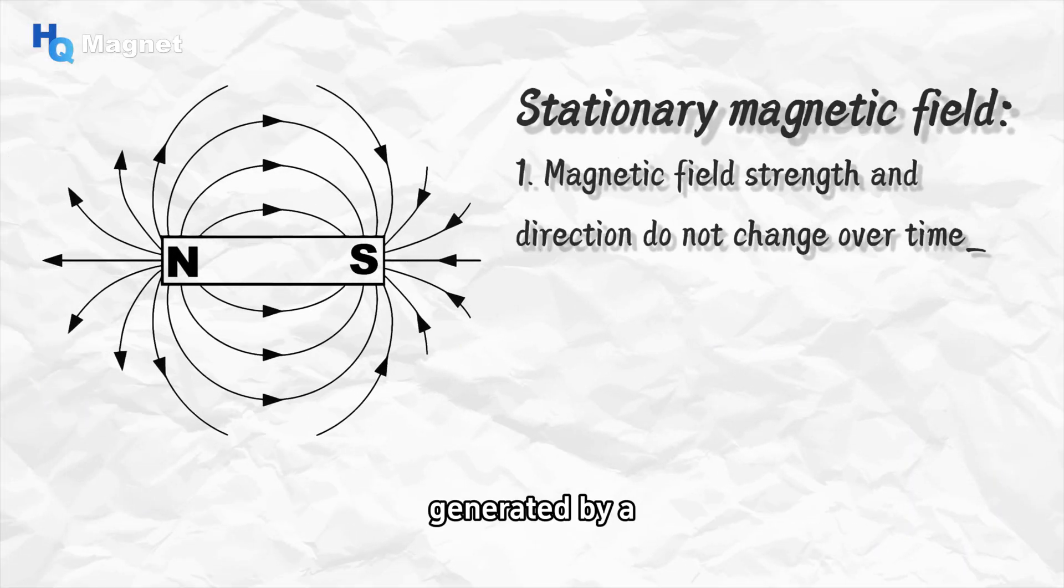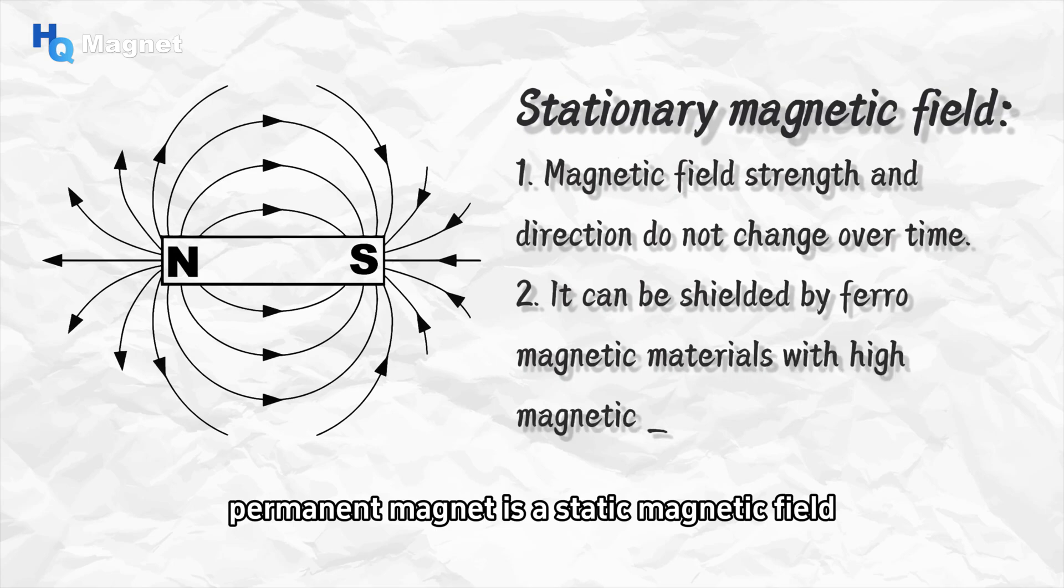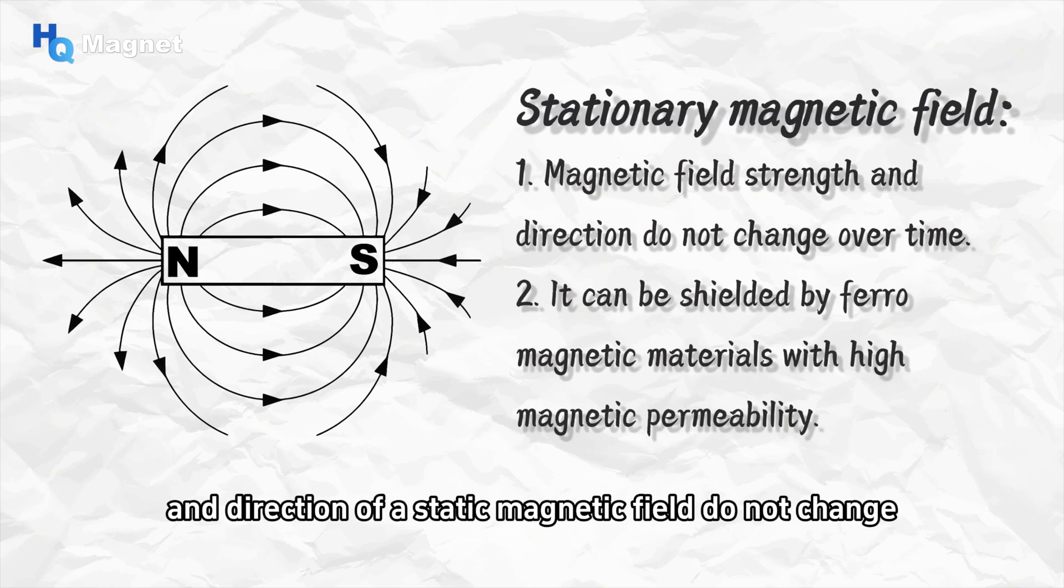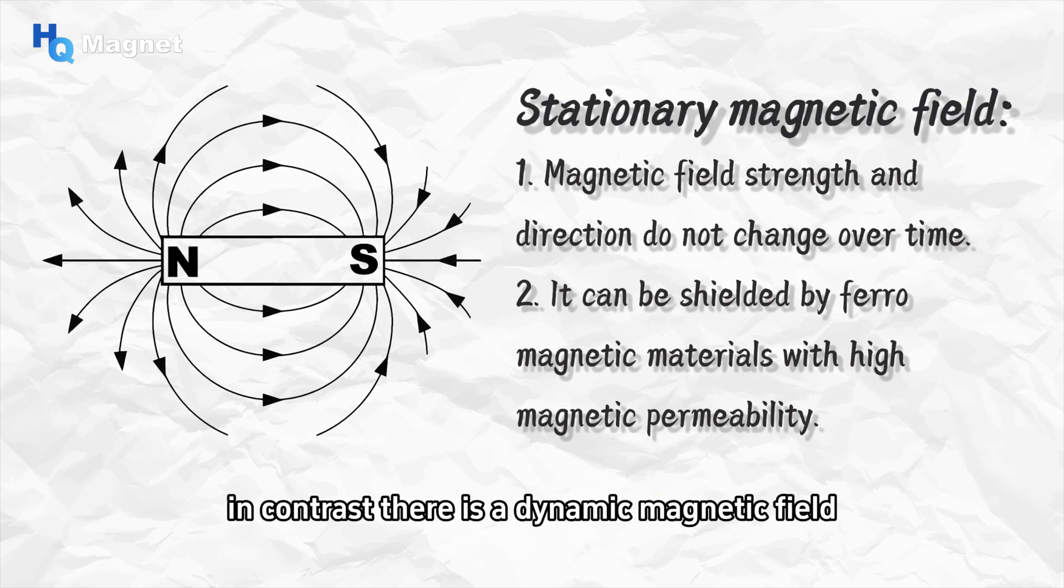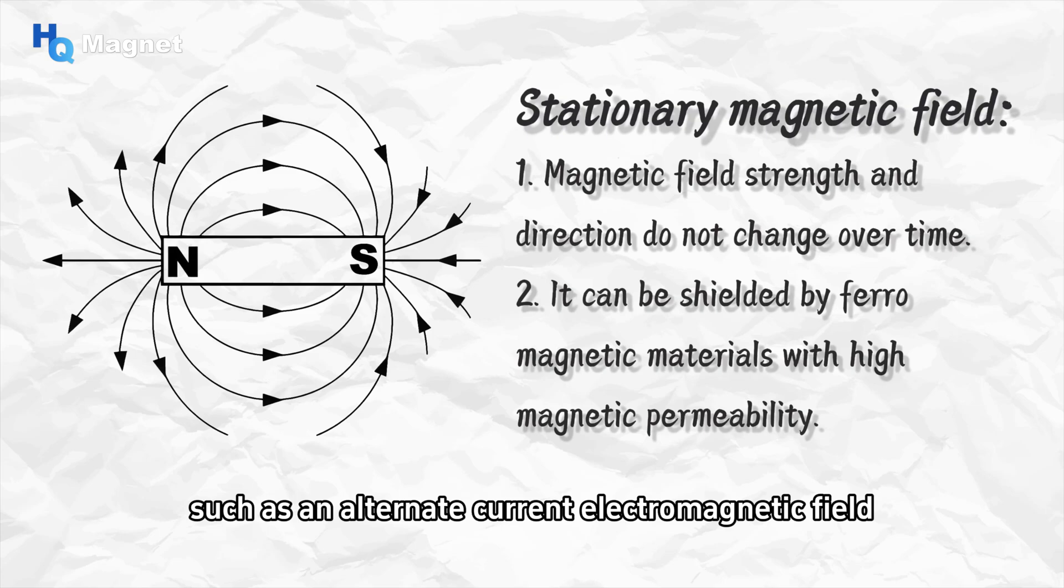Firstly, we need to know that the type of magnetic field generated by a permanent magnet is a static magnetic field. The magnetic field intensity and direction of a static magnetic field do not change over time, and it is generated by the stationary charge distribution or constant current. In contrast, there is a dynamic magnetic field, such as an alternating current electromagnetic field, which changes periodically over time.